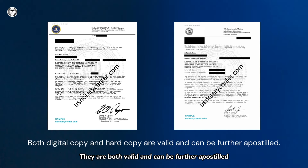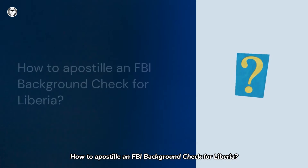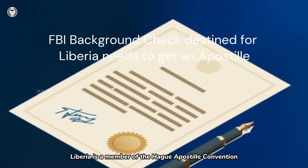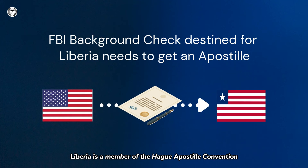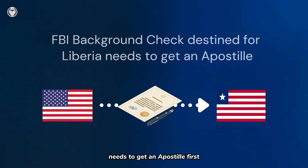They are both valid and can be further apostilled. How to apostille an FBI Background Check for Liberia? Liberia is a member of the Hague Apostille Convention. An FBI Background Check destined for Liberia needs to get an apostille first.